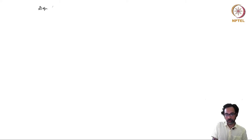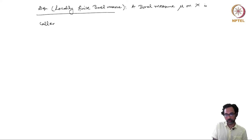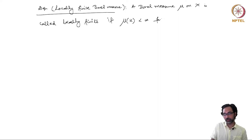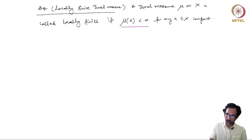Another definition: this is about a locally finite Borel measure. A Borel measure mu on x is called locally finite if the measure of all compact sets K is finite — that is, for any compact K, we have that the measure of K is finite.